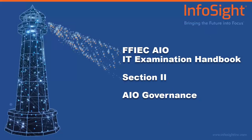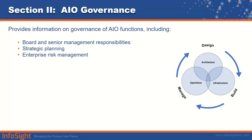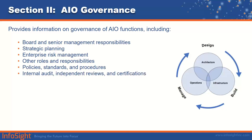Section 2 covers AIO governance — who, what, and how management oversees the 'management should' aspects. Management in AIO does not supersede the IT examination booklet on management; it is in addition to that booklet and only specific to AIO. Section 2 gives institutions information on best practices of AIO governance in areas such as board and senior management responsibilities, strategic planning, enterprise risk management, other roles and responsibilities, policy standards and procedures, internal audit, independent reviews and certifications, communications, and board and senior management reporting.